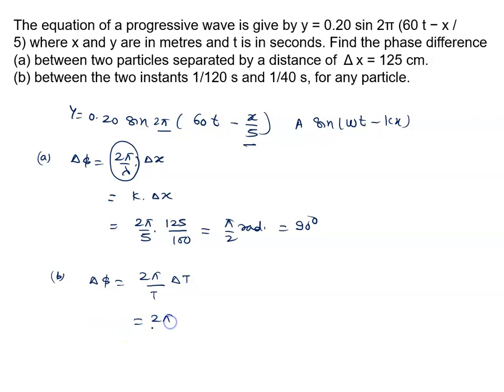2 pi upon T. T ki value nikaal na. Omega kya aayega? 2 pi times 60. Time period kitna hoga? 2 pi by omega.